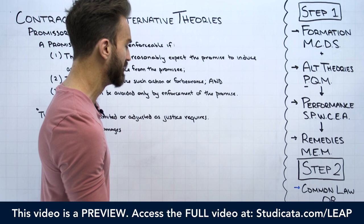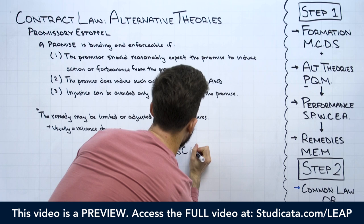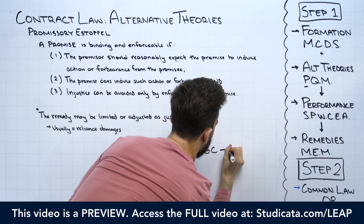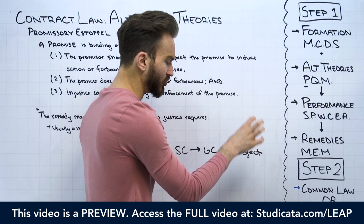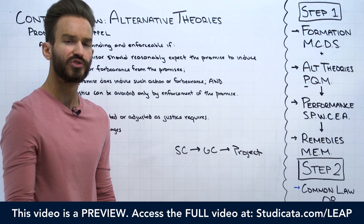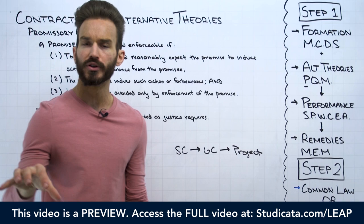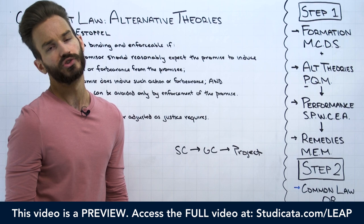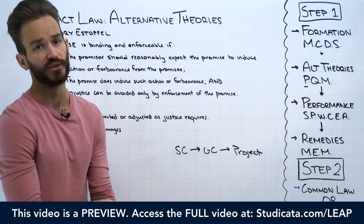This is a very common fact pattern. We have three parties: a subcontractor, a general contractor, and some sort of project. There's a party that needs a construction project completed, a general contractor whose job is to manage and oversee the project and make sure everything goes smoothly, and subcontractors who are different contractors that come in to do specific roles. This relationship typically works through a two-way bidding process.